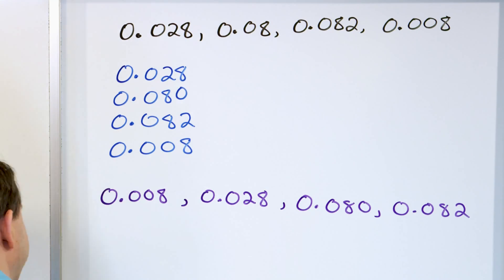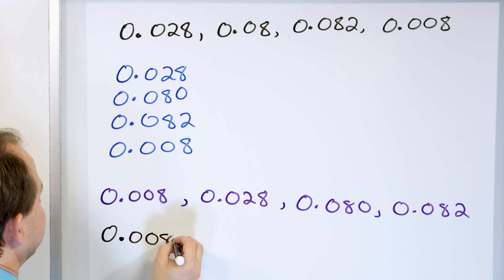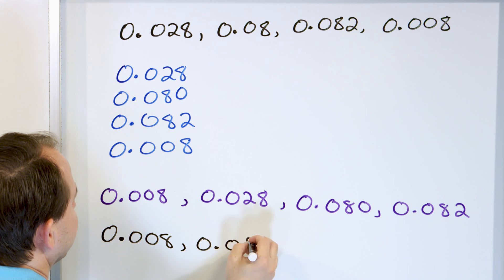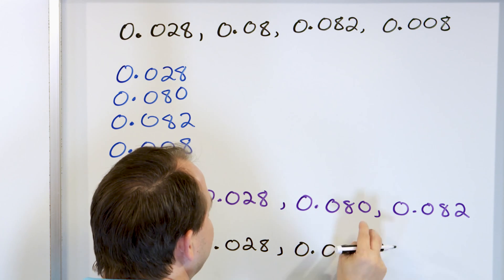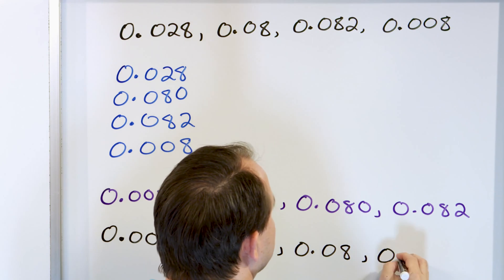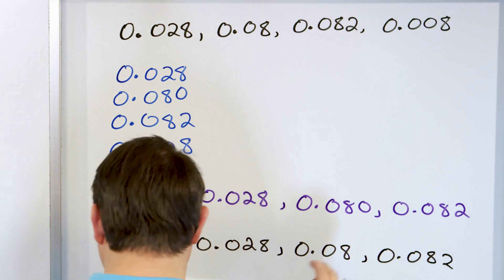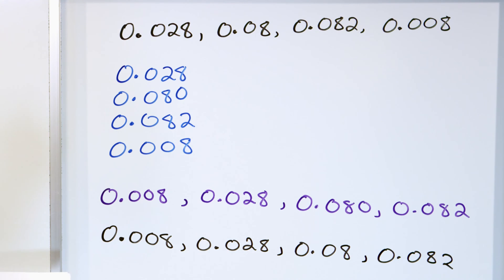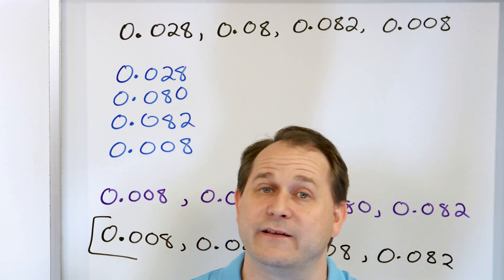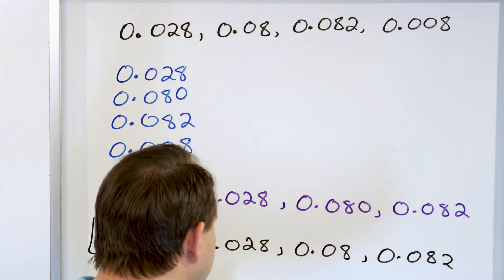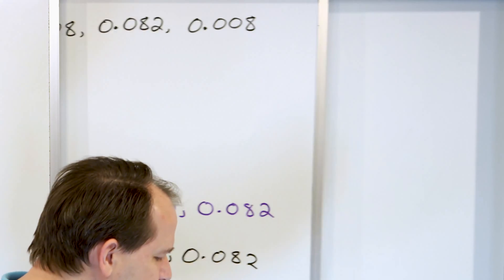Our final step is to convert back to the numbers given in the problem: 0.008, 0.028, and this one was given as 0.08 — we padded the zero — so we write it as 0.08. And then 0.082. It's very hard to look at these numbers and figure out which is smaller and bigger without doing it this way. I'm not saying you can't, but it will be more difficult and lead to errors. So I'd really like you to do it the way I'm teaching you.